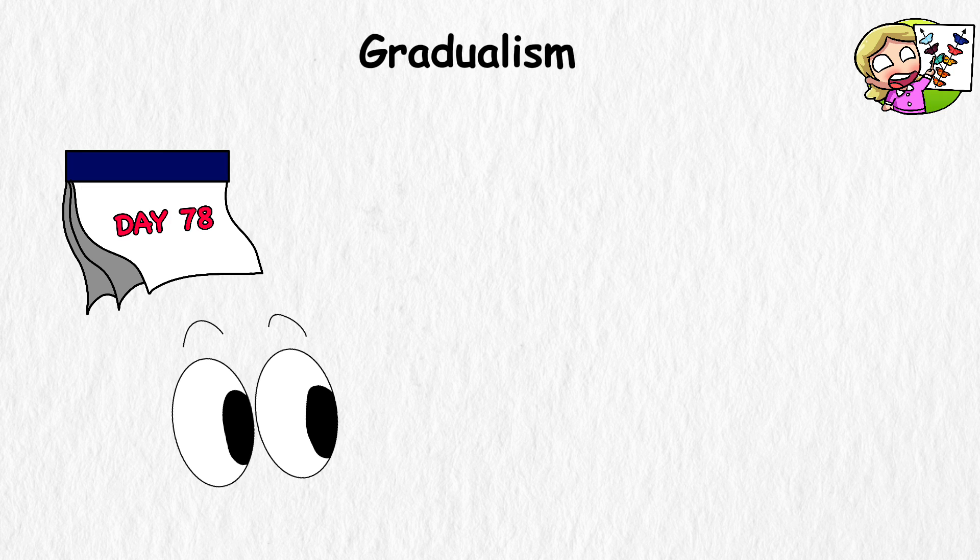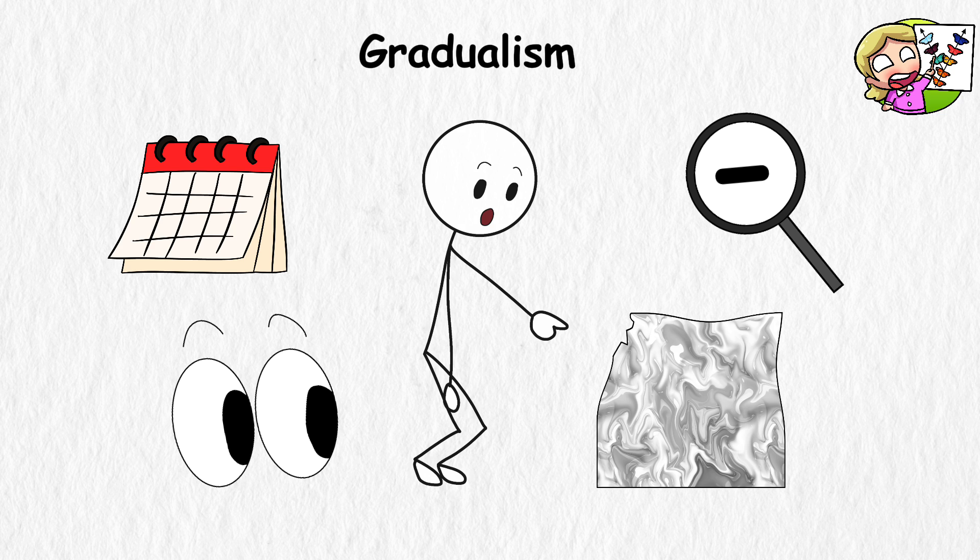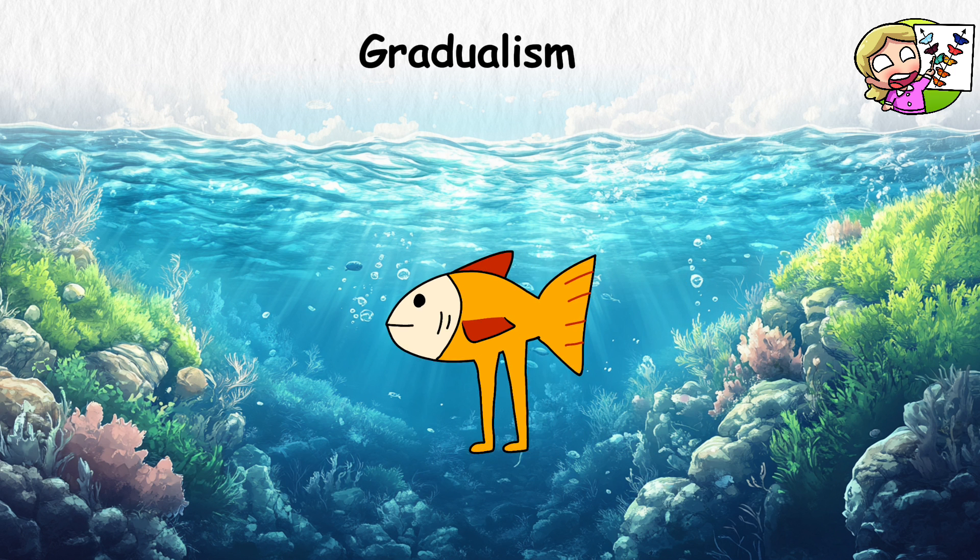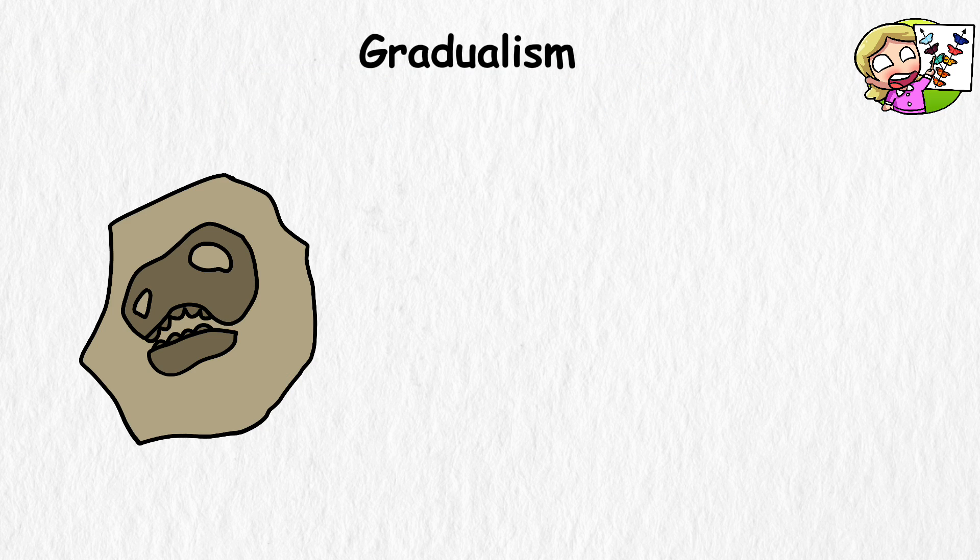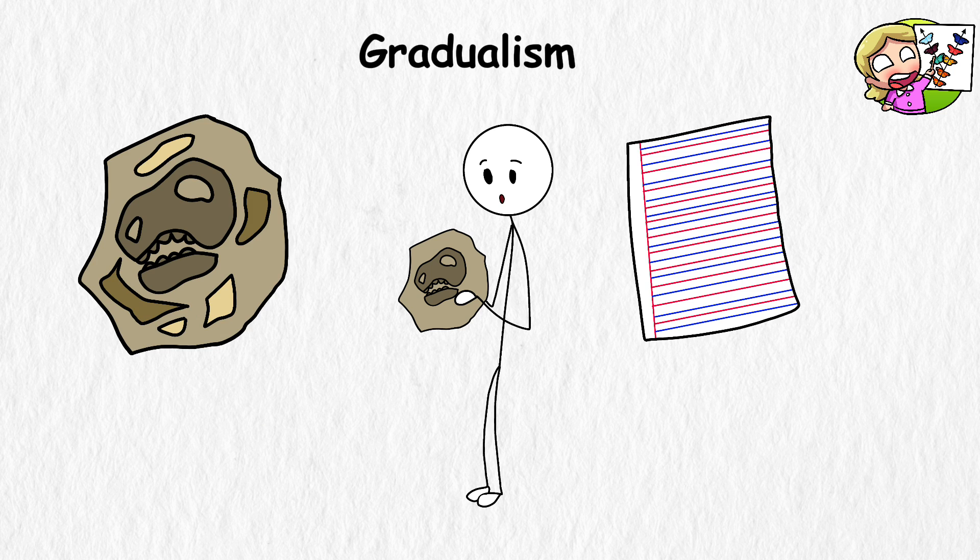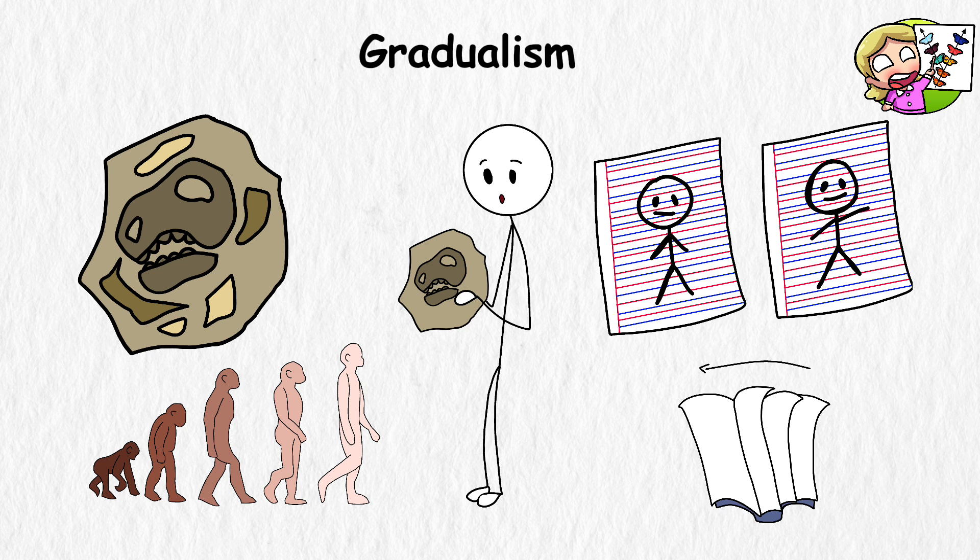If you were to watch this process daily, it might seem like nothing is happening at all. But zoom out over thousands or millions of years, and you'll see that these little changes can add to big differences, like how a fish might eventually become a land dwelling creature. Gradualism fits what we see in our fossil record. When you look at fossils, you'll see small, progressive changes from one layer of rock to another. It's like looking at a flipbook animation, where each page shows a slightly different version of a creature, and when you flip quickly, you see the whole evolutionary journey.